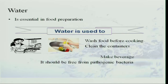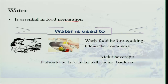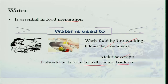Water is the one ingredient which is essential for any preparation. It is an essential part in food preparation — we use water to wash our hands and wash the vegetables and grains before cooking. Before cooking you have to clean the containers, and for that also water is used. To make beverages, water is used, and therefore the water we select should be free from pathogenic bacteria — that means it should be pure water, and that is called potable water.